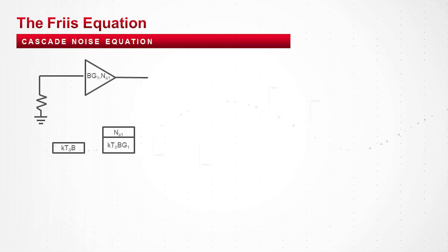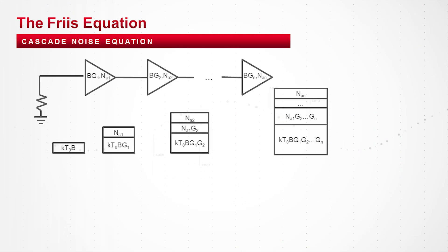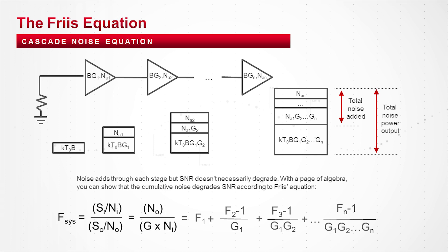Noise is additive linearly through each stage of the receiver. Noise figure is additive also, but the noise figure contribution through successive stages is divided by the gain or gains of the stages that precede it. What we're saying here is that even though we add noise through each stage, we degrade signal-to-noise ratio less and less through each successive stage because of the gain of the preceding stages. This is why we care about noise figure and why it's important to have a low noise, high gain amplifier as close to the input of the receiver as possible.